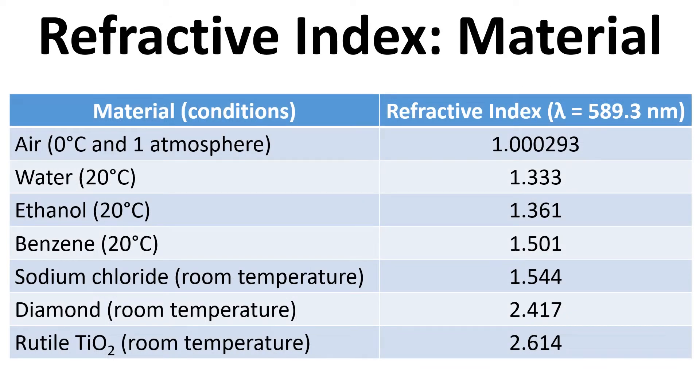If we look at these different materials, we can see that for different materials the refractive index changes quite considerably. The wavelength at which all of these were measured is at 589.3 nanometers, also referred to as the sodium D-line. It's the orangey yellow color that sodium lamps emit.